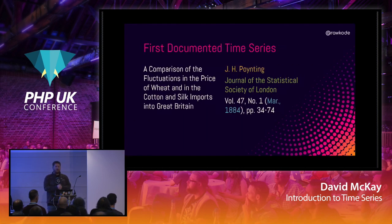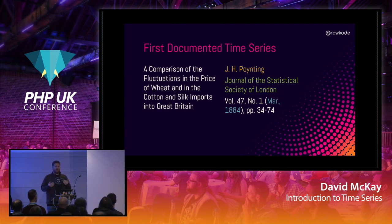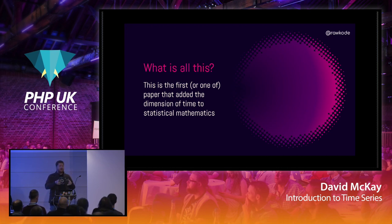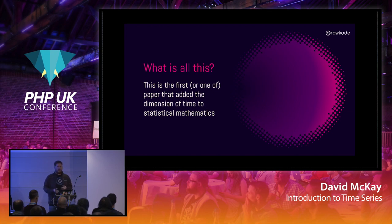What they were interested in was: if we import silk, cotton, and other textiles from around the world, does that have any correlation with the export price we're getting on our wheat? And the answer was yes. As a term, time series isn't that old — 1884. But it was the first paper that ever actually used the dimension of time in any statistical mathematics or analysis of numbers, and that's what we're going to talk about today.